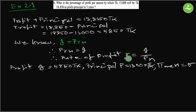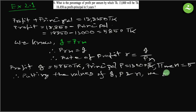Therefore, putting the values of I, P, and N, we get rate of profit.